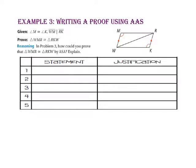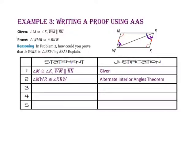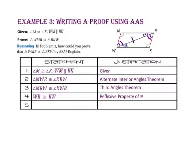We can also prove these same triangles congruent using angle-side-angle. Starting with the same given information: angle-MWR is congruent to angle-KRW by alternate interior angles. By the third angle theorem, angle-MRW is congruent to angle-KWR. Side-WR is congruent to side-RW by the reflexive property. With two angles and an included side congruent to the corresponding two angles and included side, triangle-WMR is congruent to triangle-RKW by angle-side-angle.